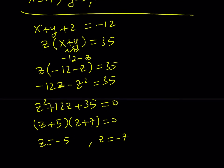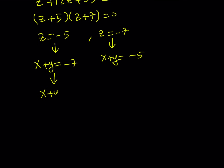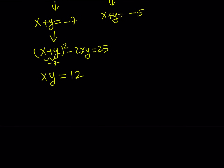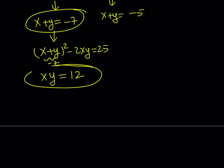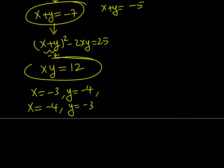We know x plus y equals negative 12 minus z. Replacing z with negative 5 gives x plus y equals negative 7. Using (x plus y) squared minus 2xy equals 25 with x plus y equal to negative 7, we get 49 minus 2xy equals 25, so xy equals 12. We need two numbers whose sum is negative 7 and product is 12 — those are negative 3 and negative 4. So the solutions here are x equals negative 3, y equals negative 4, z equals negative 5, and x equals negative 4, y equals negative 3, z equals negative 5.